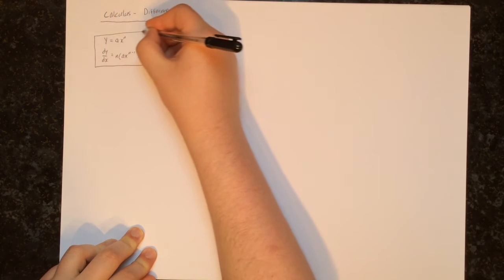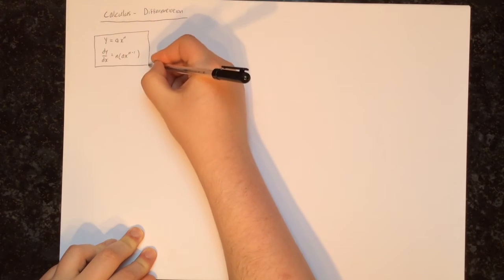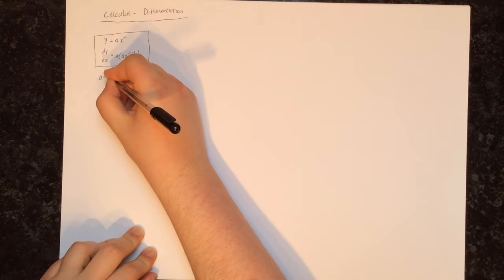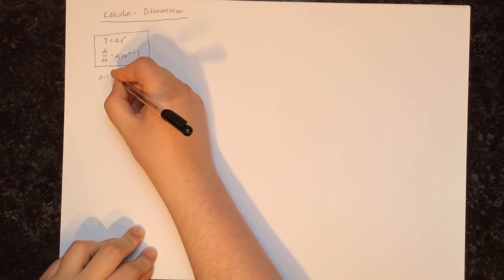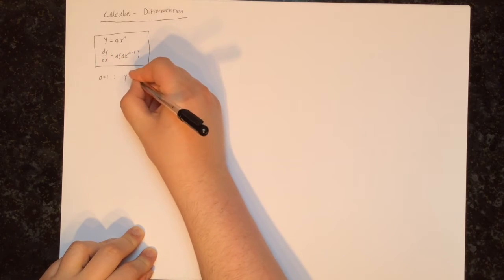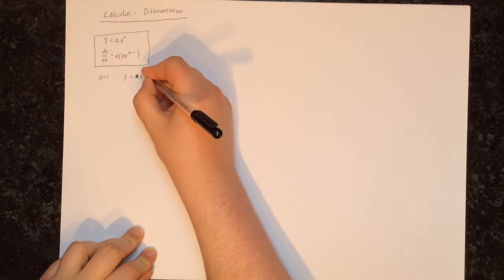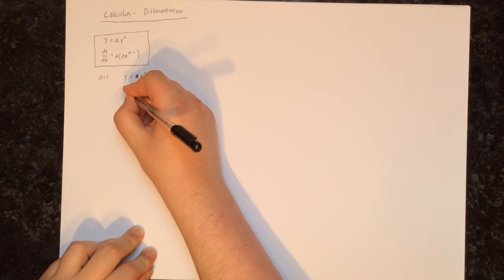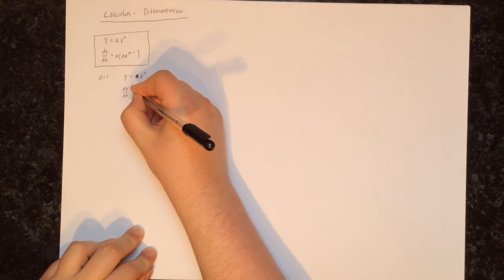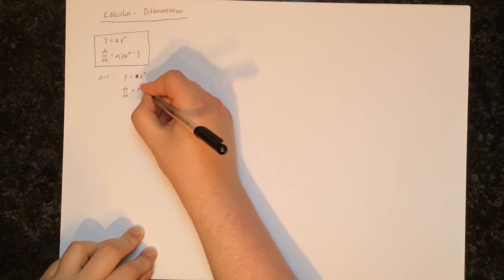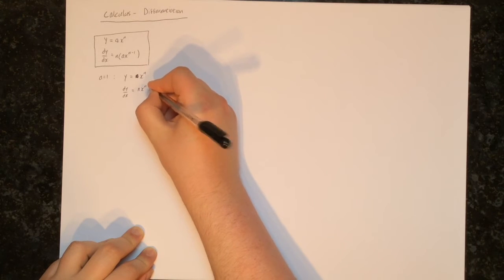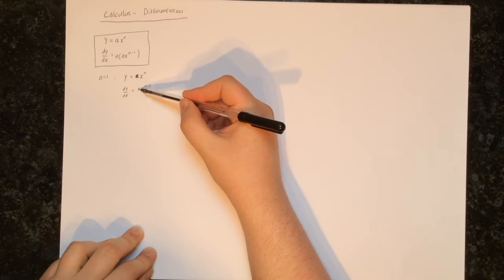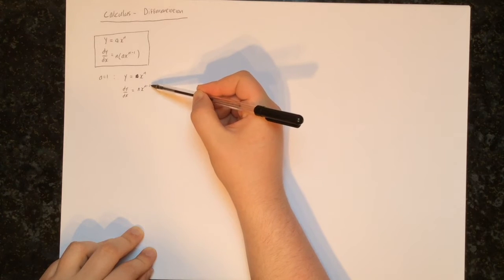That's the main thing that we've learned, but we've also looked at three special cases. If a equals 1, then what we have is y equals x to the power of n, and dy/dx will be equal to n x to the power of n minus 1. So if y equals x to the n, we multiply by the power and reduce the power by 1.